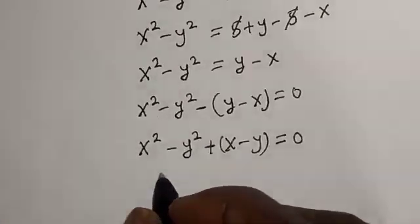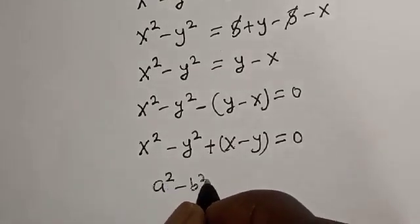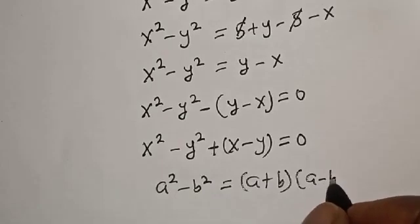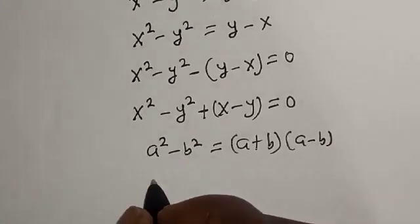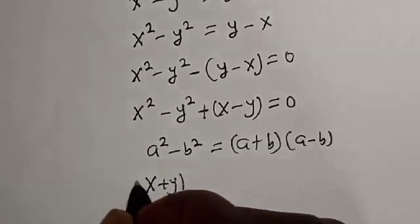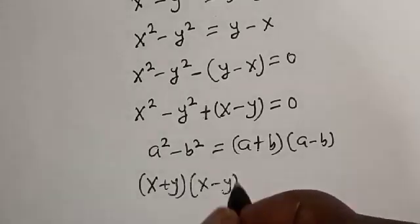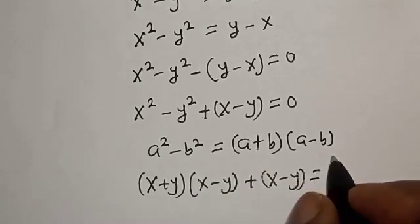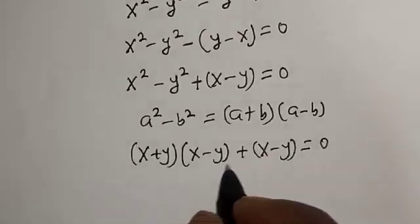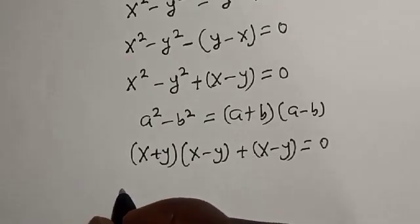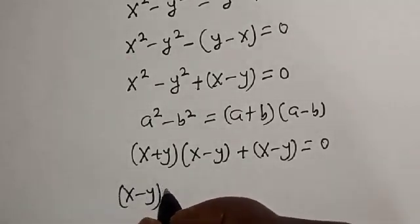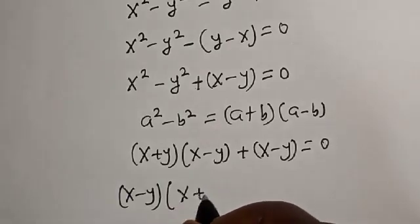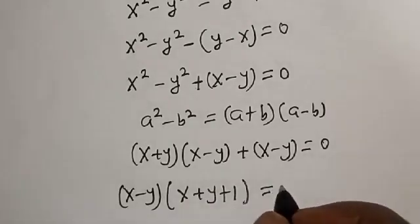From here, remember the rule that a squared minus b squared equals (a plus b)(a minus b). Applying this, we get (x plus y)(x minus y) plus (x minus y) equals 0. Now, (x minus y) is common, so we factor it out: (x minus y)(x plus y plus 1) equals 0.